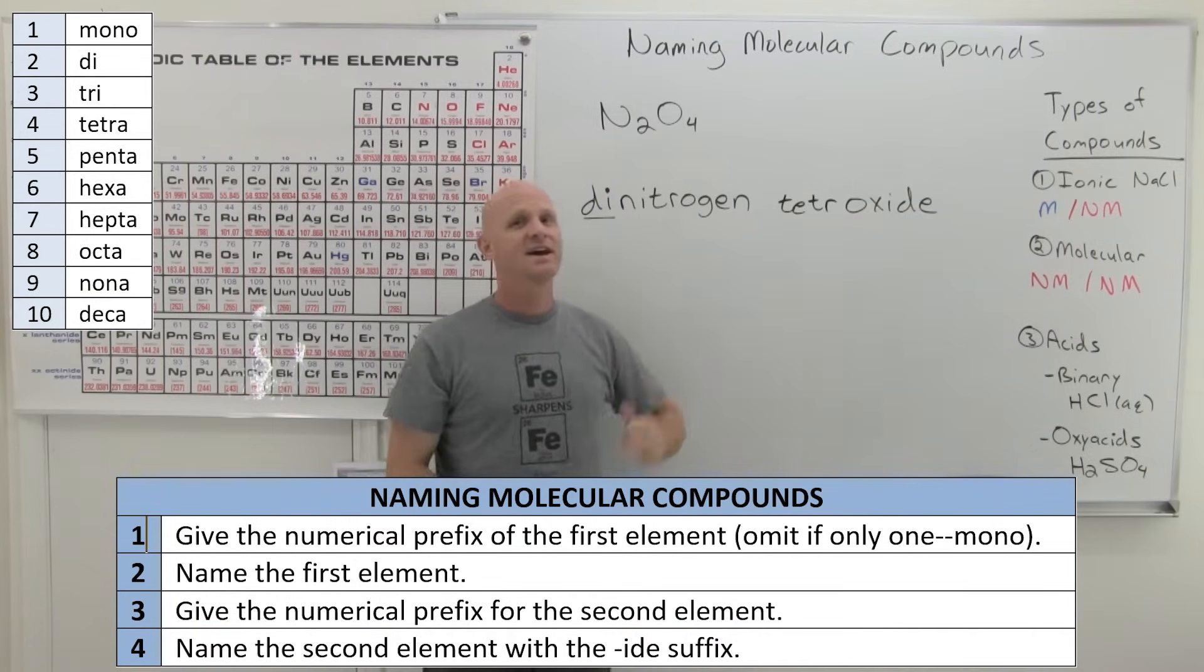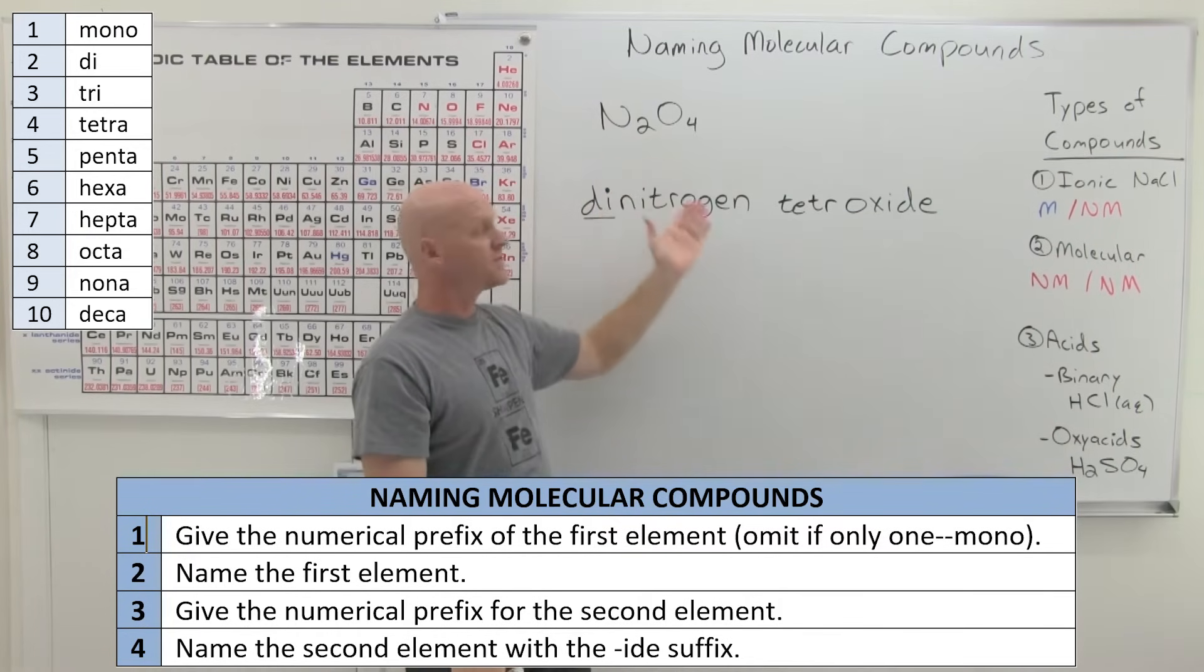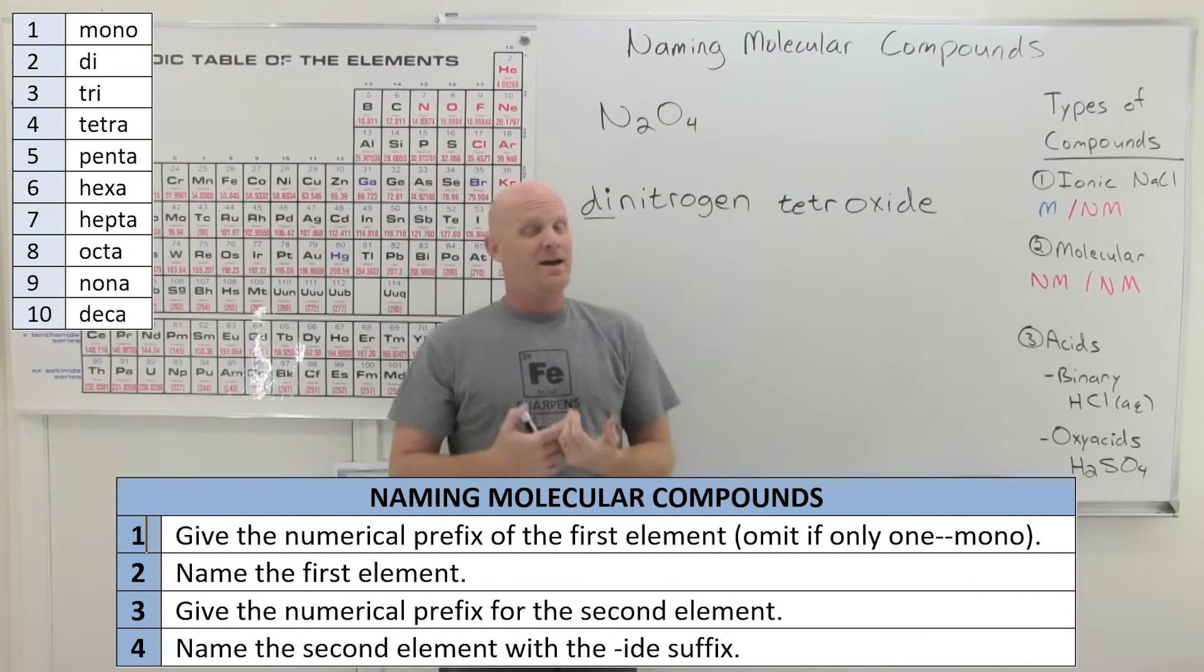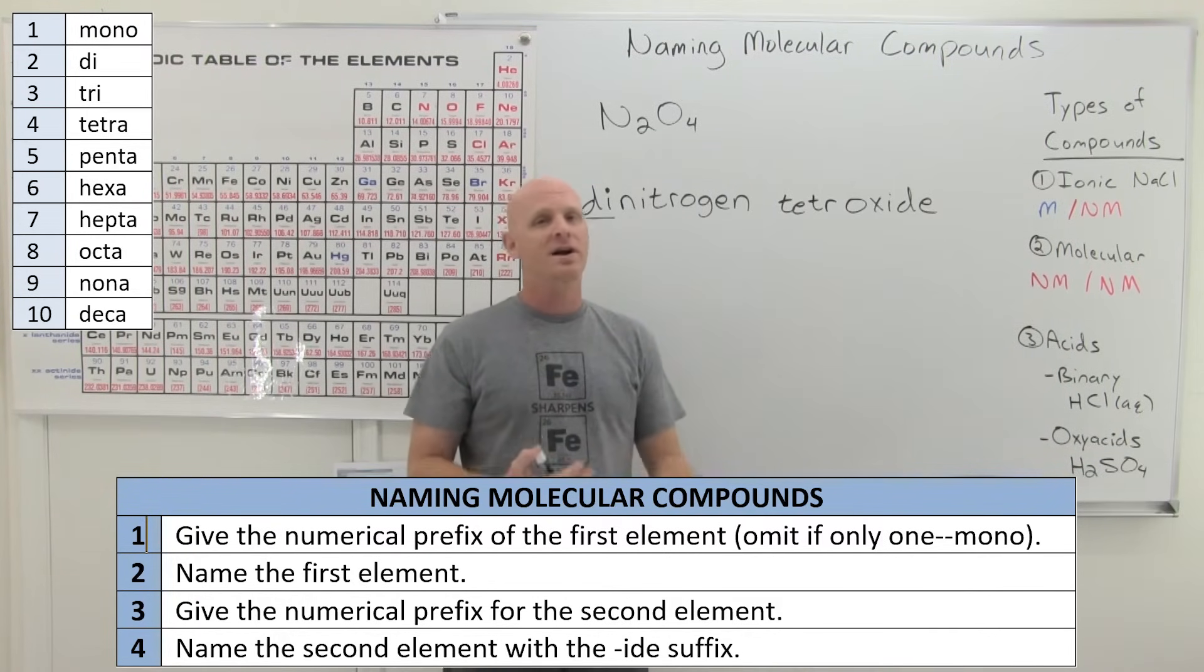And so this is dinitrogen tetroxide, N2O4. And this is easy. And it's easy to go from the formula to the name. And it's easy to go from the name back to the formula. And again, students often find this much easier than the system of rules we use for naming ionic compounds.